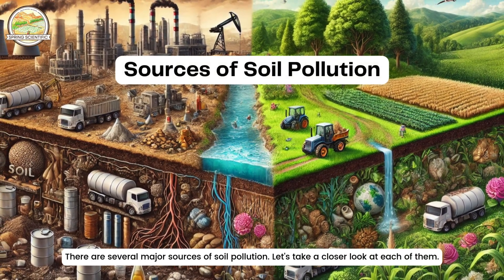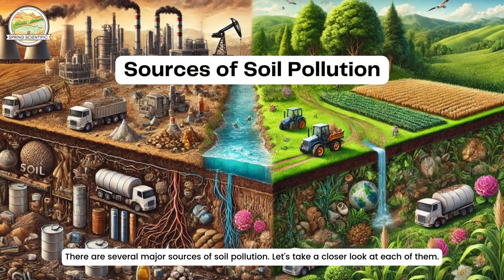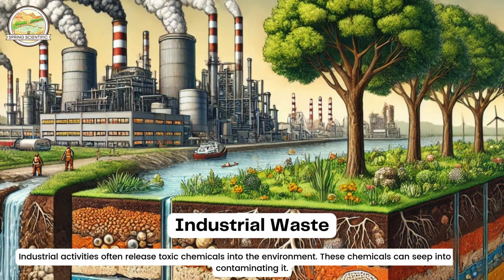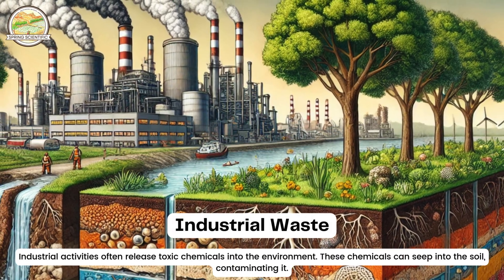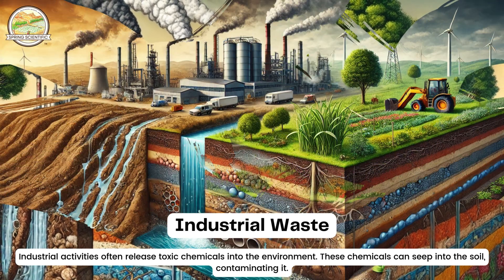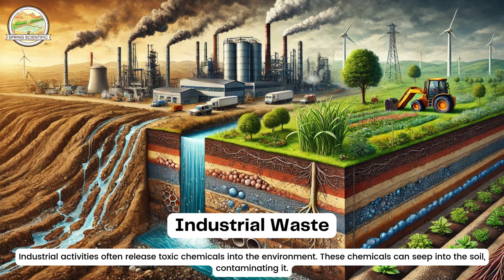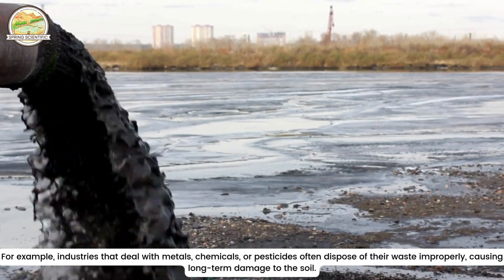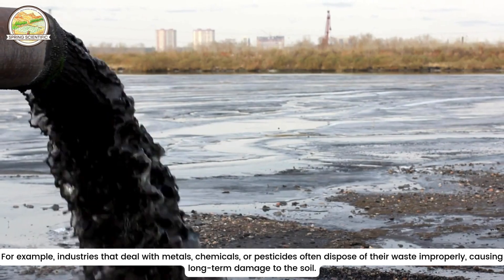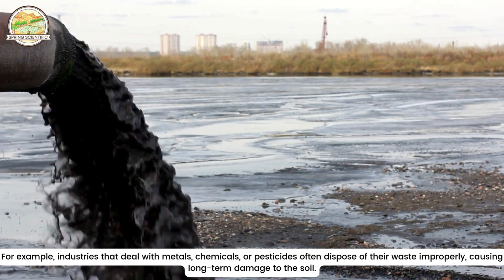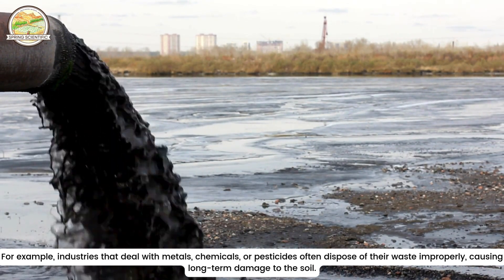There are several major sources of soil pollution. The first is industrial waste. Industrial activities often release toxic chemicals into the environment. These chemicals can seep into the soil, contaminating it. For example, industries that deal with metals, chemicals or pesticides often dispose of their waste improperly, causing long-term damage to the soil.